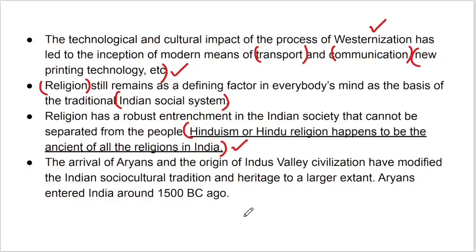The arrival of Aryans and the origin of the Indus Valley Civilization have modified Indian social culture. For those who have studied history, you will know that when Aryans entered India, our actual civilization started. Aryans entered around 1500 BC, and after that our tradition and heritage changed. Aryans considered themselves superior and practiced endogamy. Tell me in the comments what endogamy is. They also had notions of ritual purity and pollution.